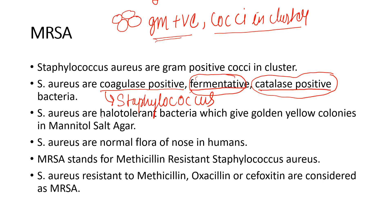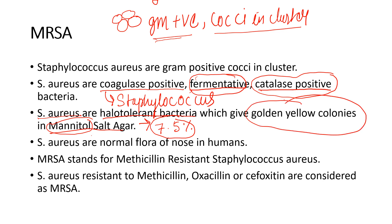Staphylococci are halo-tolerant bacteria. In mannitol salt agar, there is about 7.5% NaCl. Staphylococcus aureus is able to tolerate this 7.5% NaCl concentration. Due to the fermentation of mannitol and the presence of the indicator phenol red, the colonies will appear as golden yellow colonies on mannitol salt agar.